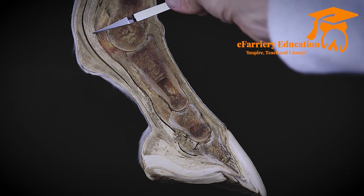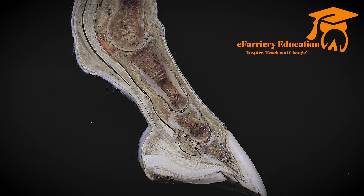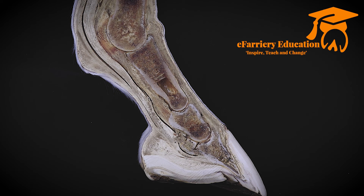We've just missed off two bones which you can't actually see on the sagittal section, because there are two additional bones that make up the fetlock joint — our proximal sesamoid bones. There are two of them, and because this is a sagittal section cut right through the middle of those two bones, we can't actually see them, but they would be there articulating with the distal extremity of the third metacarpal and the proximal extremity of the proximal phalanx. Those are the bones of the digit.